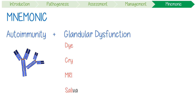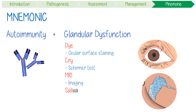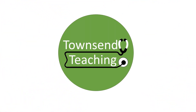The dye is a reminder that you can do ocular surface staining, reduced crying can be measured with a Schirmer test, tissue damage can sometimes be seen on imaging, and saliva hypofunction can be measured with sialometry. Make sure you check out my playlist if you love easy ways to remember medicine. Thanks for watching Townsend Teachings.